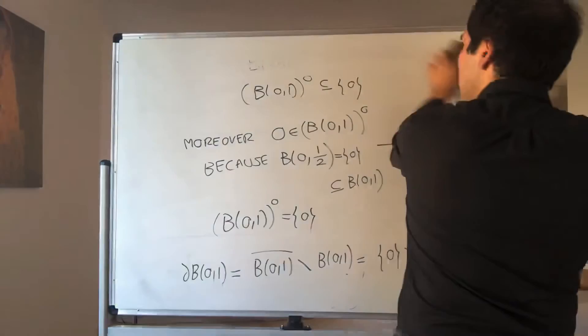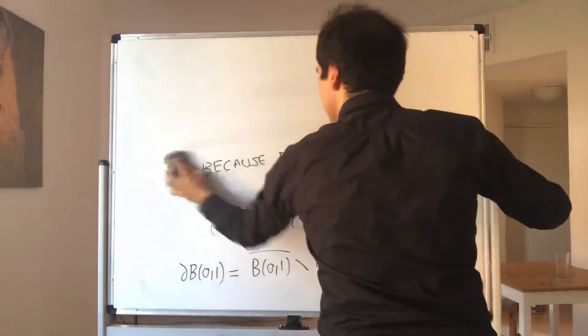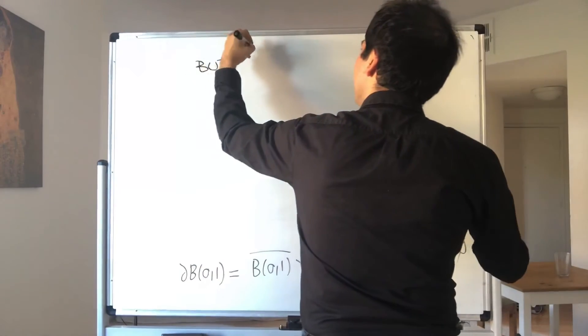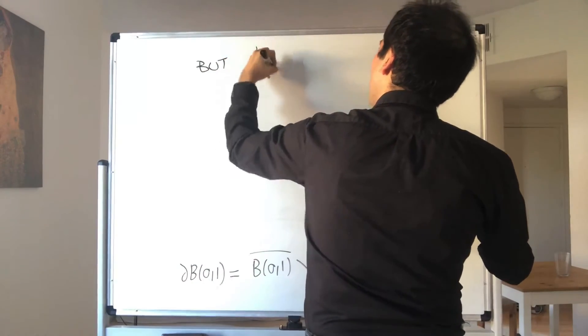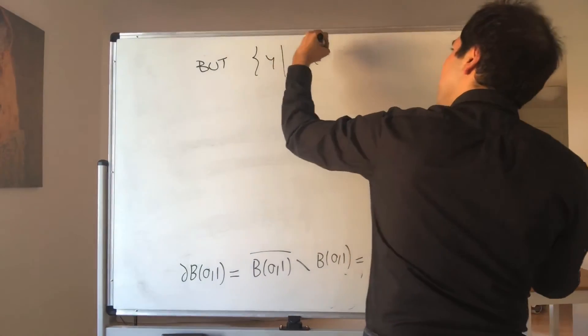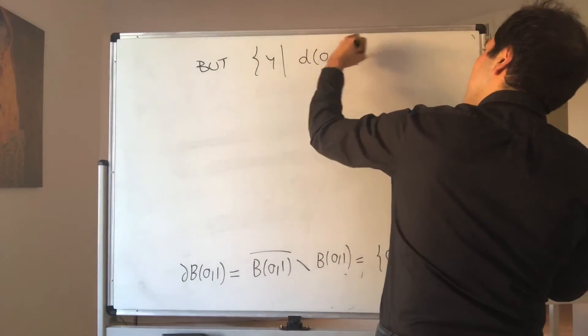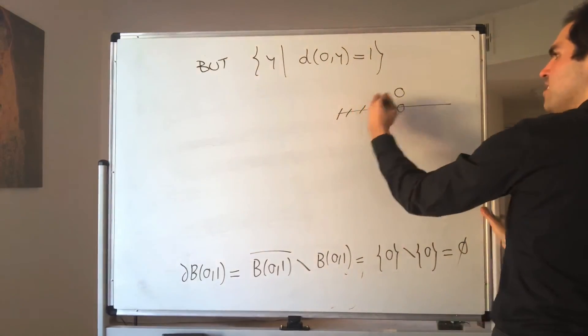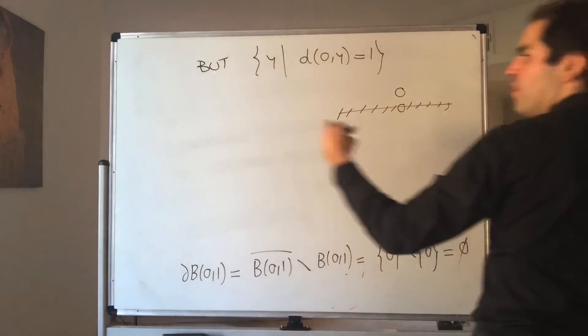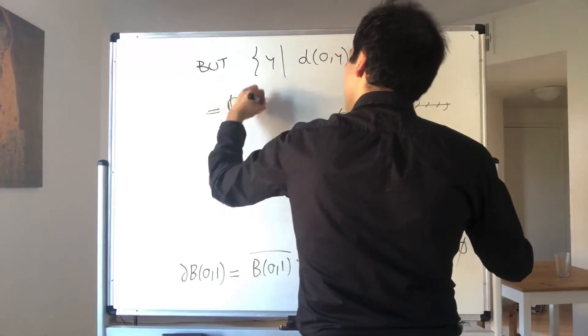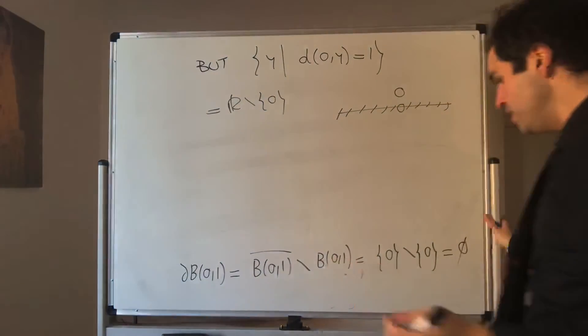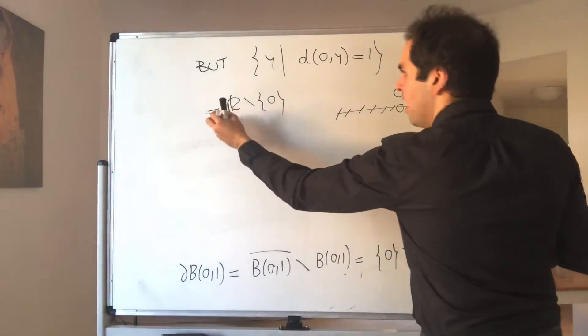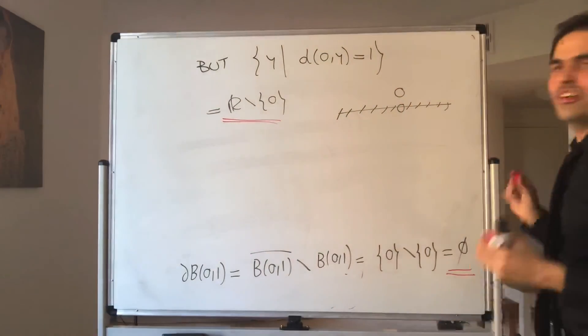Well, if you want the set of points y such that the distance between zero and y equals one, well, anything other than zero is a distance one away from zero. So it's really everything, all of R, without zero. So in this case, the boundary of your ball is non-equal to the sphere of radius one. So how cool is that?